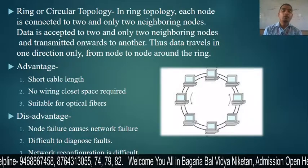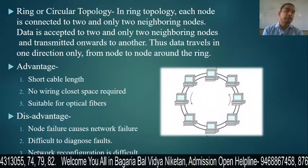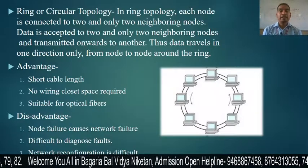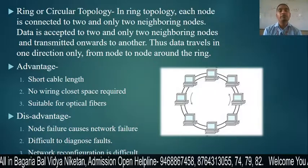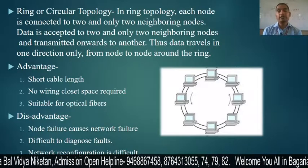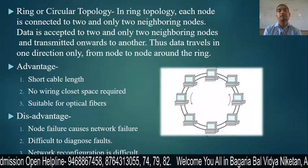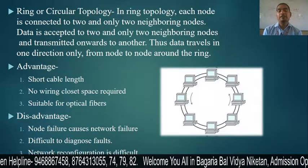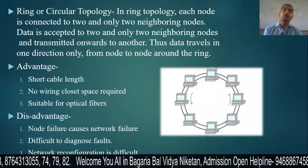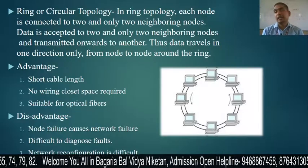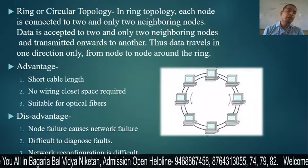The disadvantages of ring topology are: node failure causes network failure — if one node fails, the whole network fails. Next is difficult to diagnose fault — you have to check each node one by one to find where the problem is, making fault diagnosis very difficult. Next is network reconfiguration is difficult — if you isolate a fault and need to reconfigure the network again, it is difficult. Increasing or decreasing the number of nodes is also not easy.